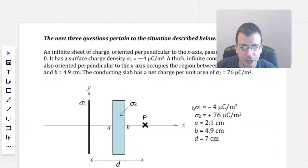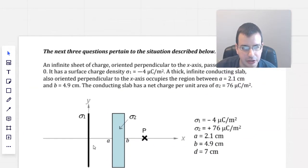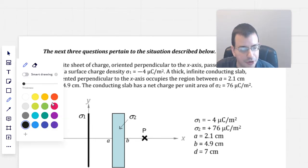An infinite sheet of charge oriented perpendicular to the x-axis passes through x equals 0. It has a surface charge density of negative 4 microcoulombs per meter squared. A thick infinite conducting slab, also oriented perpendicular to the x-axis, occupies a region between 2.1 and 4.9 centimeters. The conducting slab has a net charge per unit area of 76 microcoulombs per square meter.